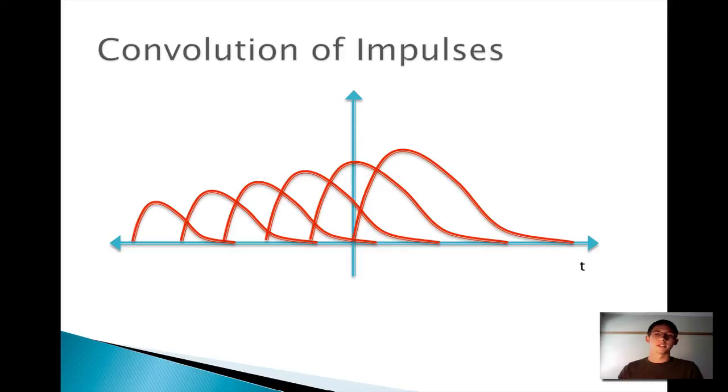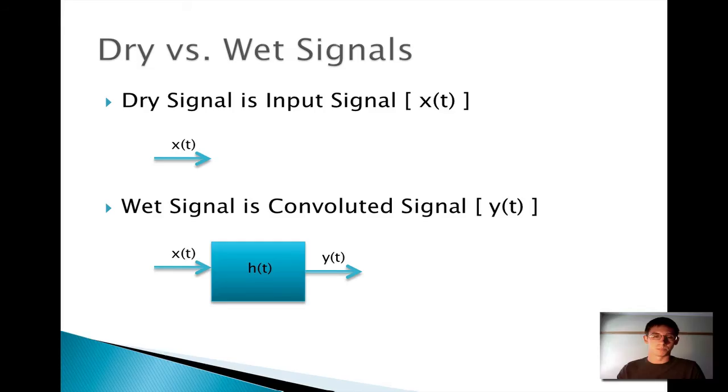So what we can do is we can convolute this signal by adding all of these, all of the responses to the impulses together, and you get a brand new signal. This is what convoluting means. And what this means is it can be scaled. Most of the time it can be scaled, so dynamics are preserved.